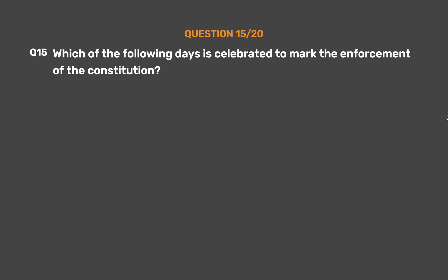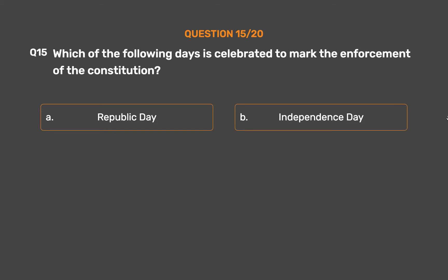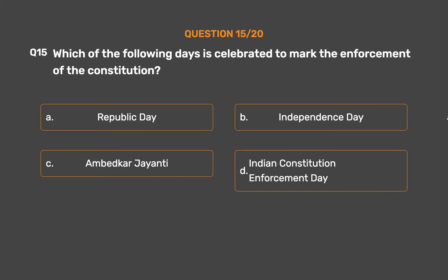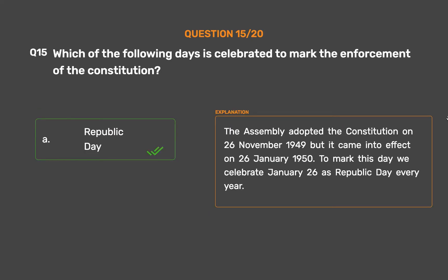Question 15: Which of the following days is celebrated to mark the enforcement of the constitution? Option A: Republic Day. Option B: Independence Day. Option C: Ambedkar Jayanti. Option D: Indian Constitution Enforcement Day. The correct answer is Option A: Republic Day. The Assembly adopted the constitution on the 26th of November 1949, but it came into effect on the 26th of January 1950. To mark this day, we celebrate January 26th as Republic Day every year.